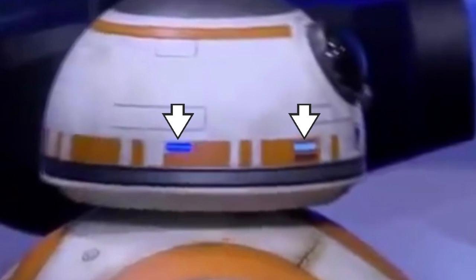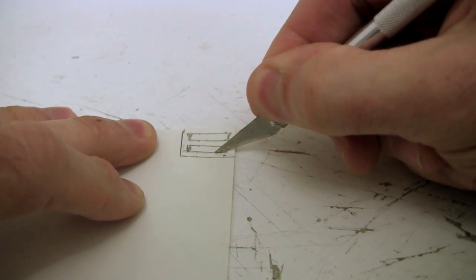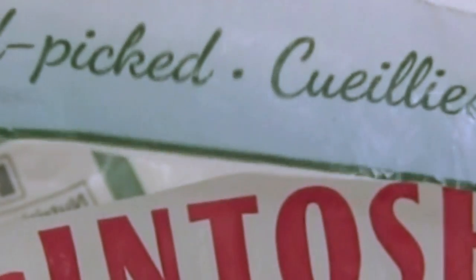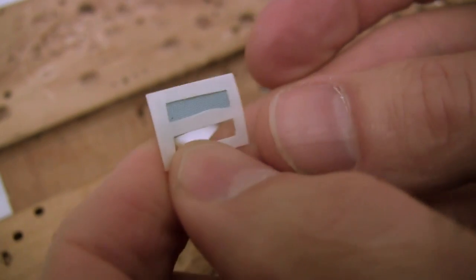Next up are these lit rectangles. I start with a thin sheet of plastic from a hobby store. For the light blue material that the light shines through, I found this blue on an apple bag. I cut and superglue a piece to the thin plastic.